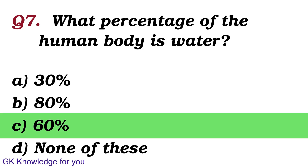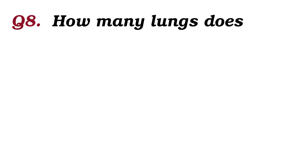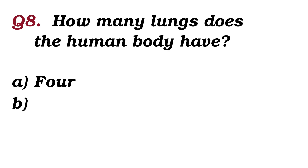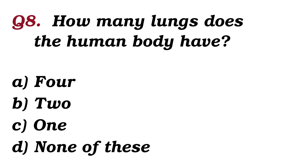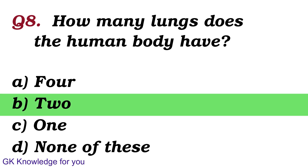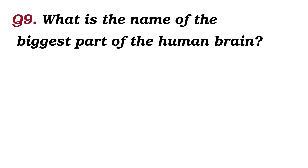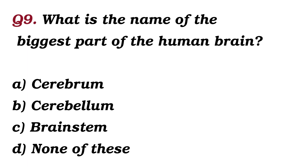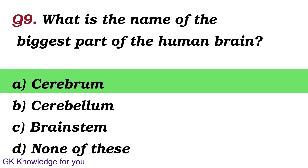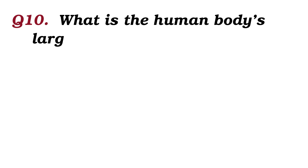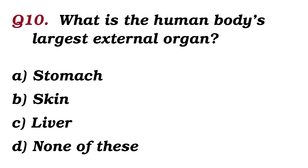What percentage of the human body is water? The answer is 60%. How many lungs does the human body have? The answer is 2. What is the name of the biggest part of the human brain? The answer is cerebrum.